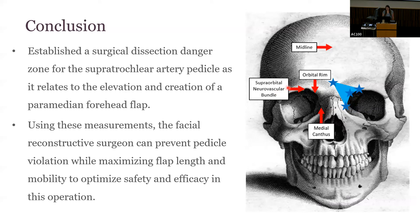Here in this drawing, you can see the surgical dissection danger zone we created, with the midline mark, medial canthus, bony orbital rim, and supraorbital neurovascular bundle. This study has established a surgical dissection danger zone for the supratrochlear artery pedicle as it relates to the elevation and creation of a paramedian forehead flap. Using these measurements, the facial reconstruction surgeon can prevent pedicle violation while maximizing flap length and mobility to optimize safety and efficacy in this operation.